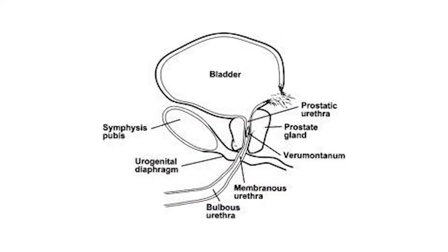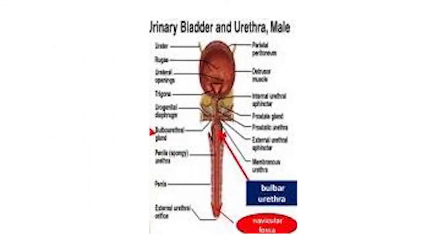This animated image shows the prostatic urethra, verumontanum, membranous urethra, and bladder rupture clearly. A fifth image shows the anatomy from the urinary bladder to the external opening of the urethra. The anterior urethra extends from the membranous urethra to the external urethral orifice. The bulbar urethra lies in the bulbous spongiosum — the widest part — and the penile urethra lies in the corpus spongiosum, with its terminal part dilated in the glans penis forming the navicular fossa.